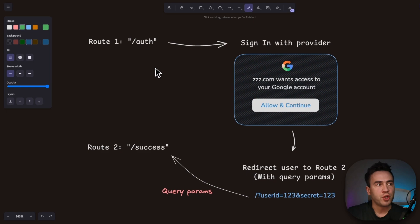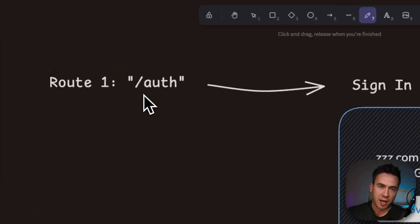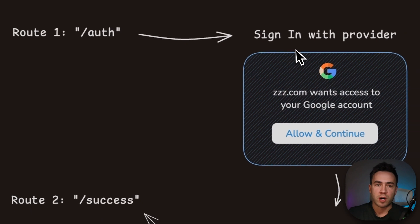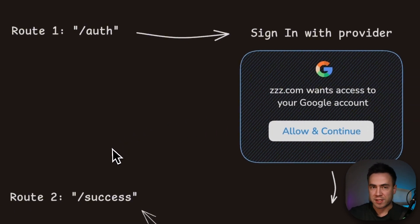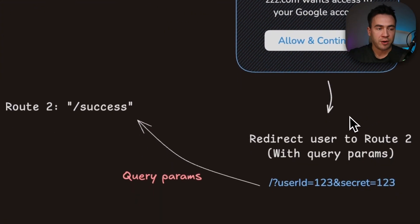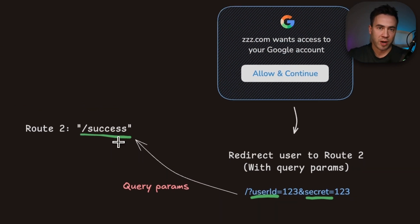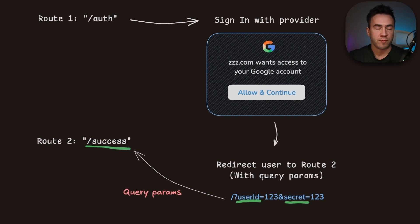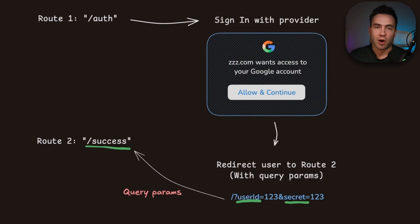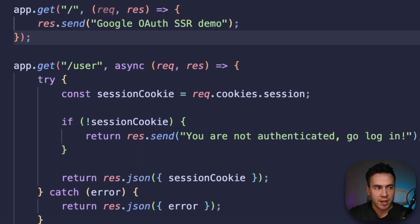For the OAuth login flow, we're going to need to create two routes. The first route is going to be forward slash auth, and in this route we're going to create a custom sign-in link and take the user to that link, which will send us to our OAuth provider — in this case Google. Once we log in with our provider, this is going to redirect us to our second route, the success route. It's going to append the user ID and secret as query parameters to that success route URL. In that success route, once signed in, we're responsible for generating a session and then setting a session cookie.